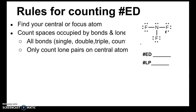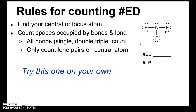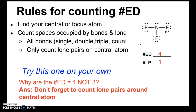Next example: NF3. Try this one on your own first — pause the video now, and when you press play the answer will be revealed. This one has four electron domains and one lone pair. You might think it should be three electron domains, not four. Don't forget to count lone pairs around the central atom as well. Here we have three electron domains from the bonds and then an additional one from the lone pair, giving us a total of four electron domains.